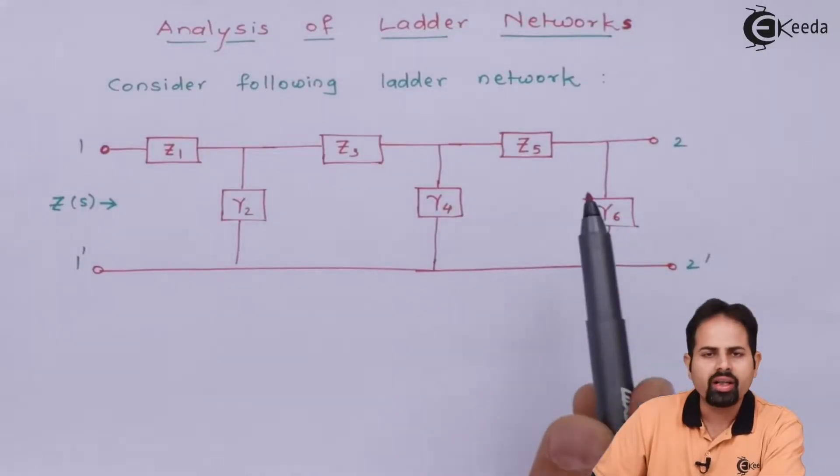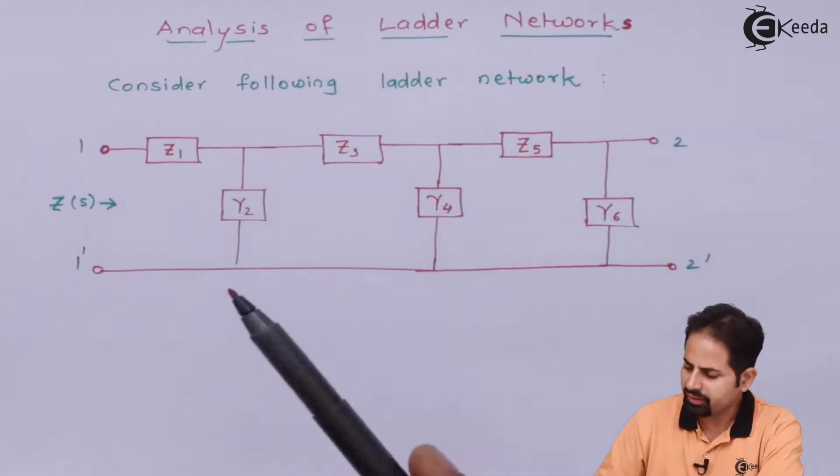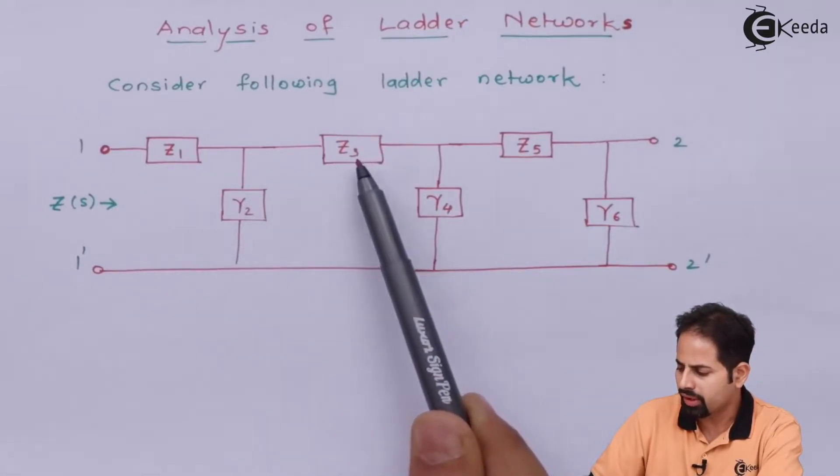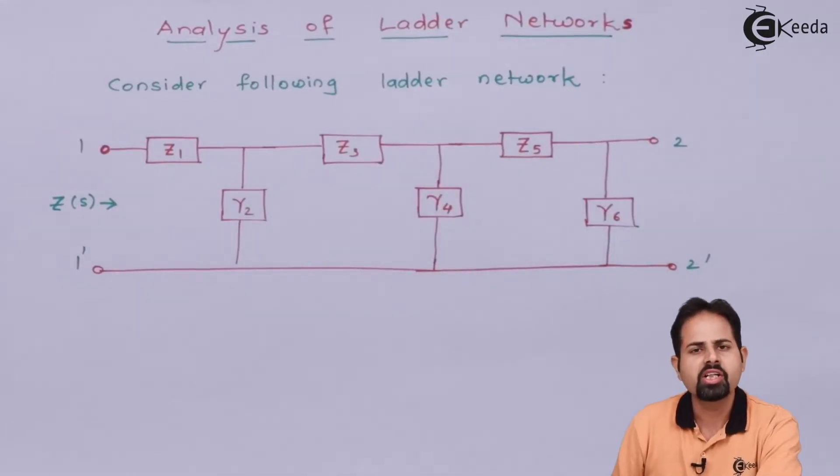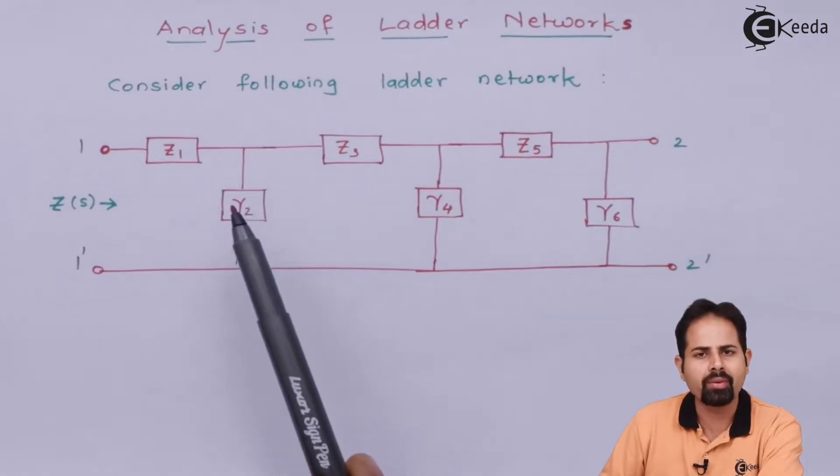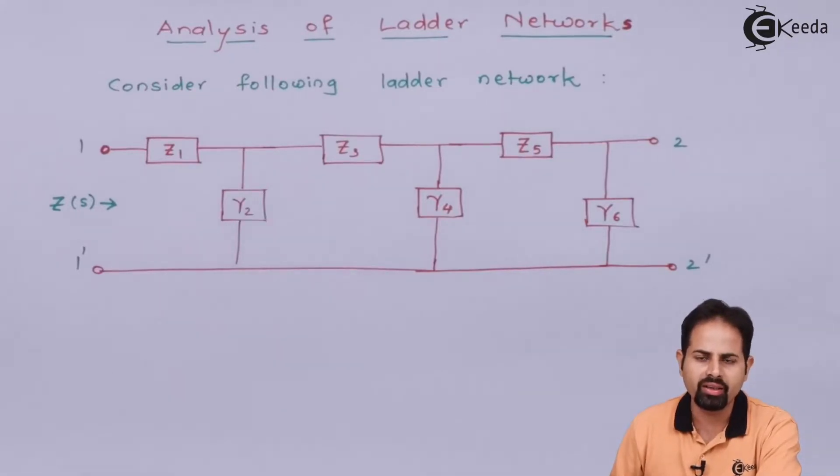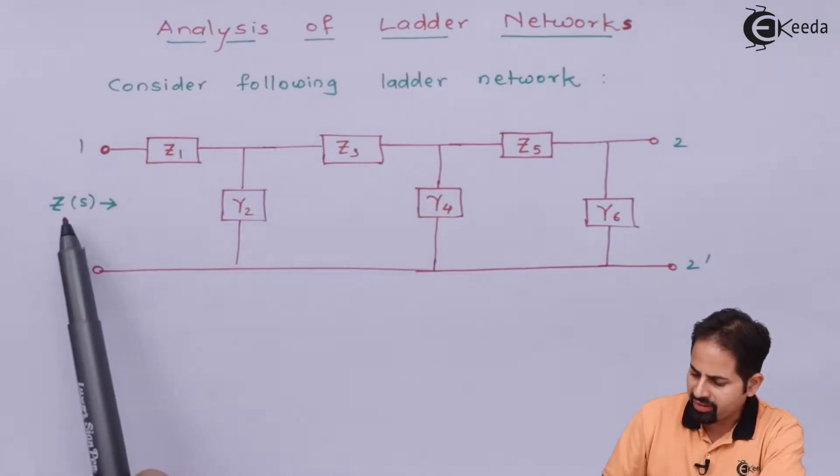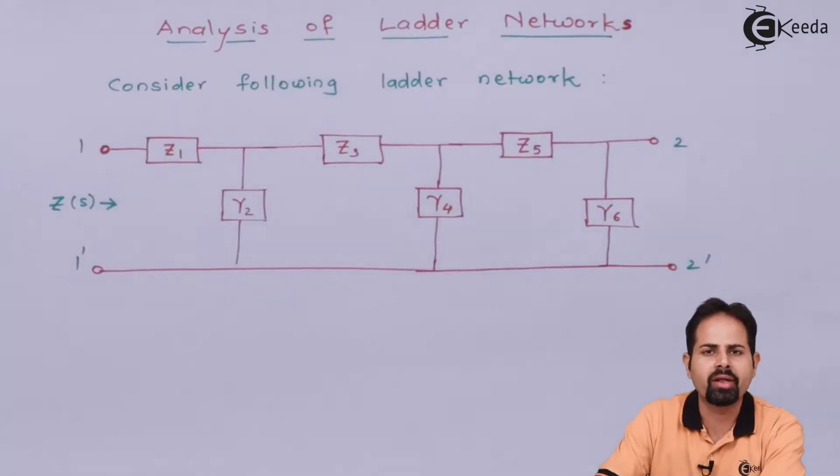Here you can see, I have drawn a specific circuit where there are impedances and admittances Z1, Y2, Z3, Y4, Z5 and Y6. We know that admittances are connected in parallel and impedances are in series. And we are supposed to find Z, that is equivalent impedance or we can say input impedance.